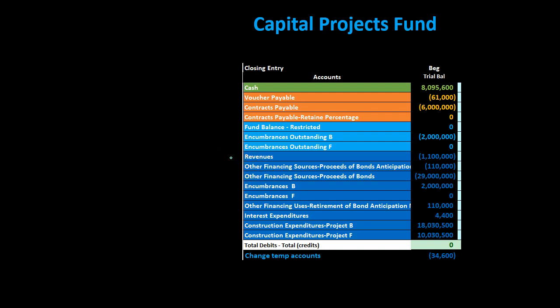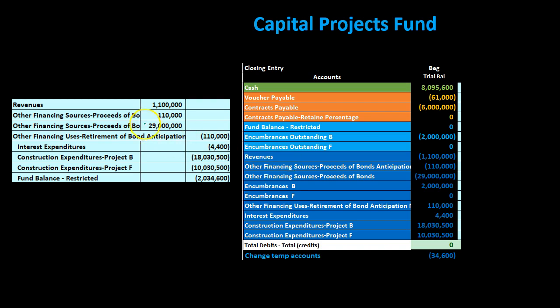We're going to take whatever's in the temporary accounts and make them zero. If there's a debit in it, we're going to credit it to make it go down to zero. If there's a credit in it, we're going to debit it to make it go down to zero — we'll construct the journal entry by seeing what's in it and doing the opposite. Revenues have a credit balance so we're going to debit them. Other financing sources are like revenue accounts with credit balances, so we debit them too. We also debit the other financing sources from bond proceeds. We skip the encumbrances — those are kept as a clearing account as opposed to a temporary account.